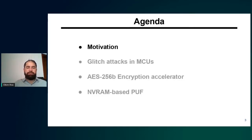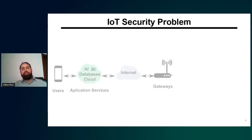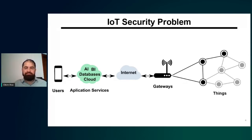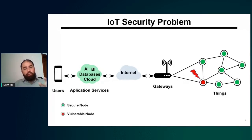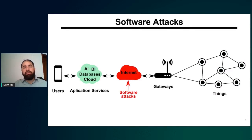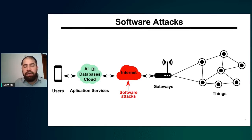Let's start with the motivation and talk about the IoT security problem. Networked sensors in transportation systems, power grids, and industry represent an estimated 25 billion installed devices in the world. The network security is only as safe as the installed sensor nodes. If you have one sensor node that is vulnerable, you have the whole sensor network vulnerable. There are two different types of attacks: software attacks and hardware attacks. We are going to focus in this presentation on hardware attacks and hardware solutions to enhance security in system-on-chips.